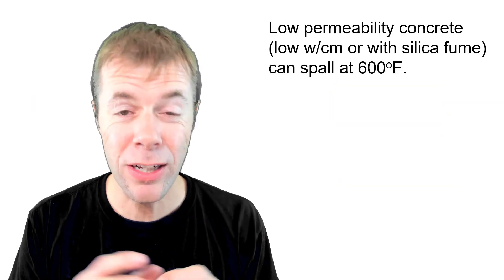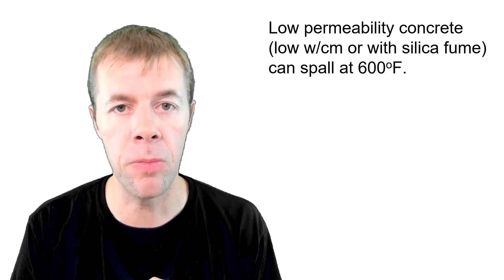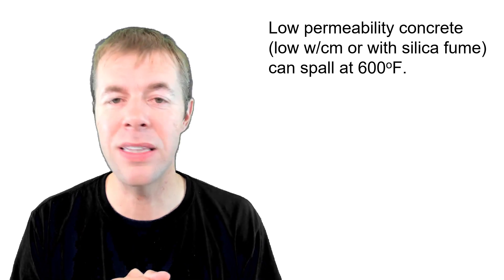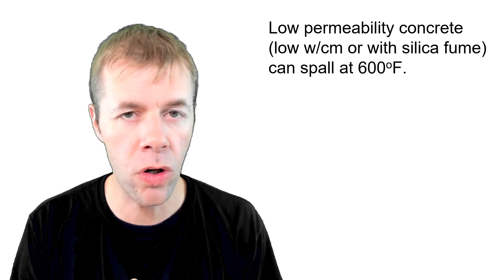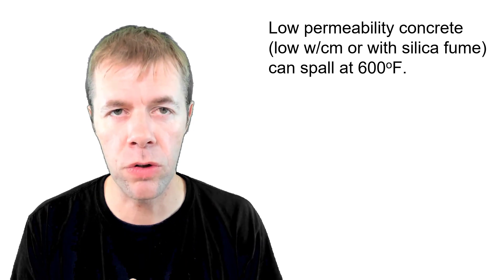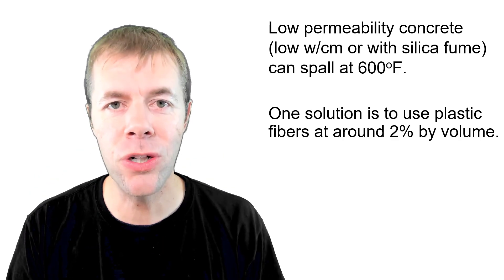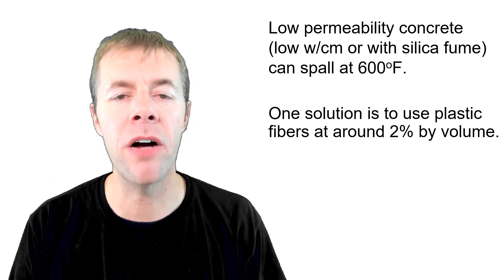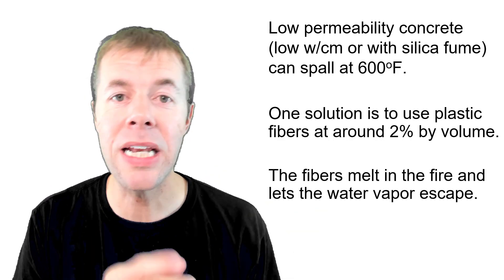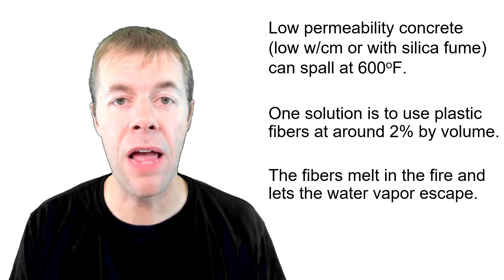Low permeability of concrete, that's with like a low water cement ratio, anything below about a 0.40, or if you use silica fume in it, these can spall at temperatures as low as 600 degrees Fahrenheit. This is not very hot. This is not damaging to the concrete, but all of a sudden you can lose the entire face of your concrete member. One solution to stop this is to actually incorporate plastic fibers into your concrete mixture at about 2% by volume. Those fibers will actually melt and provide channels for that water to get in and out, for that vapor to get in and out, and the pressures won't be as high and they won't spall.